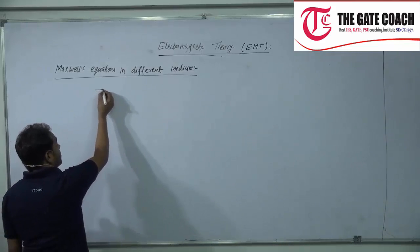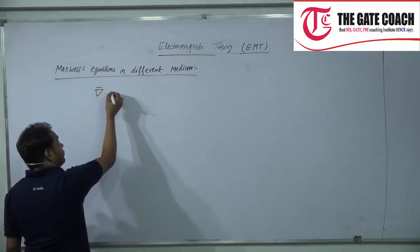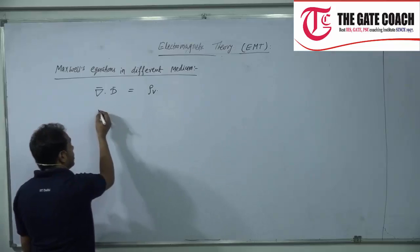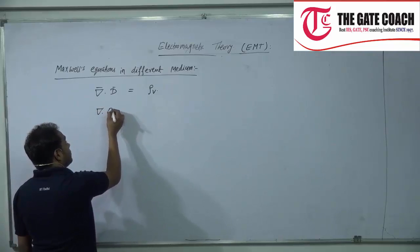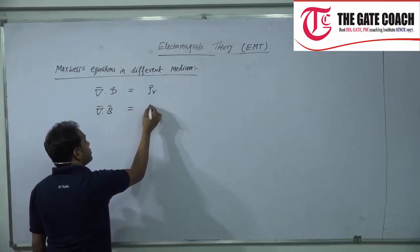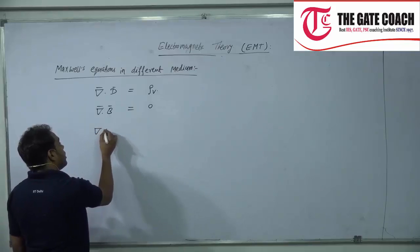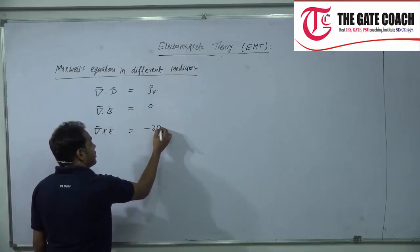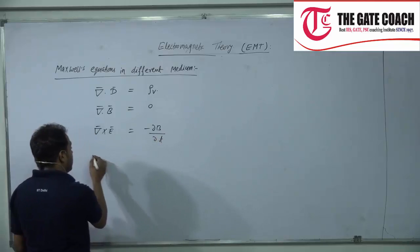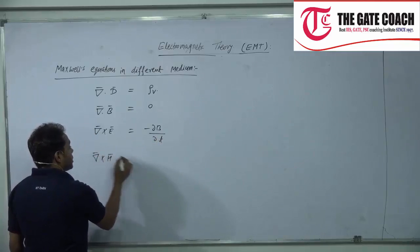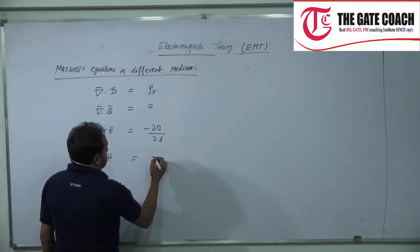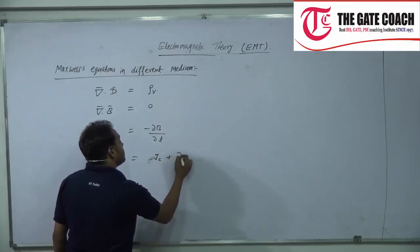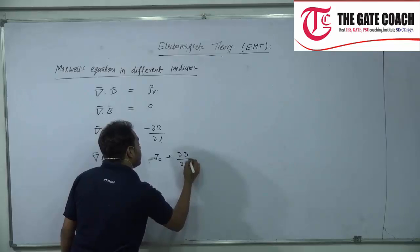The first one, written in point form or differential form, is: del dot D equals rho. The second is del dot B equals 0. The third is del cross E equals minus del B by del T. And the fourth is del cross H equals J_C plus del D by del T.